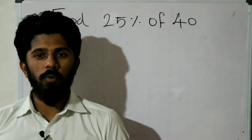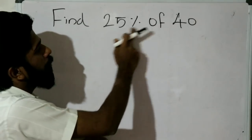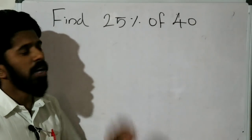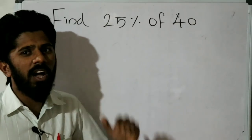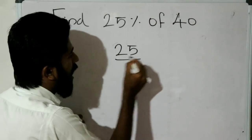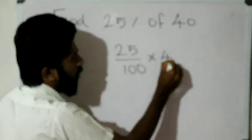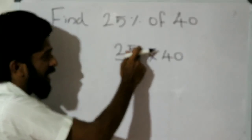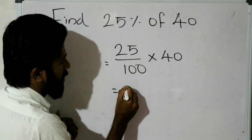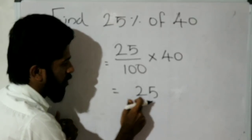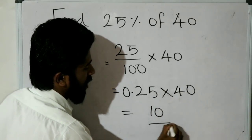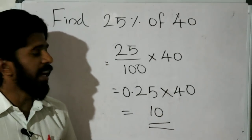Now, find 25 percentage of 40. 25 divided by 100 into 40 — that is 25 into 40 divided by 100. Cancel: 0.25 into 40. Therefore the answer is 10.